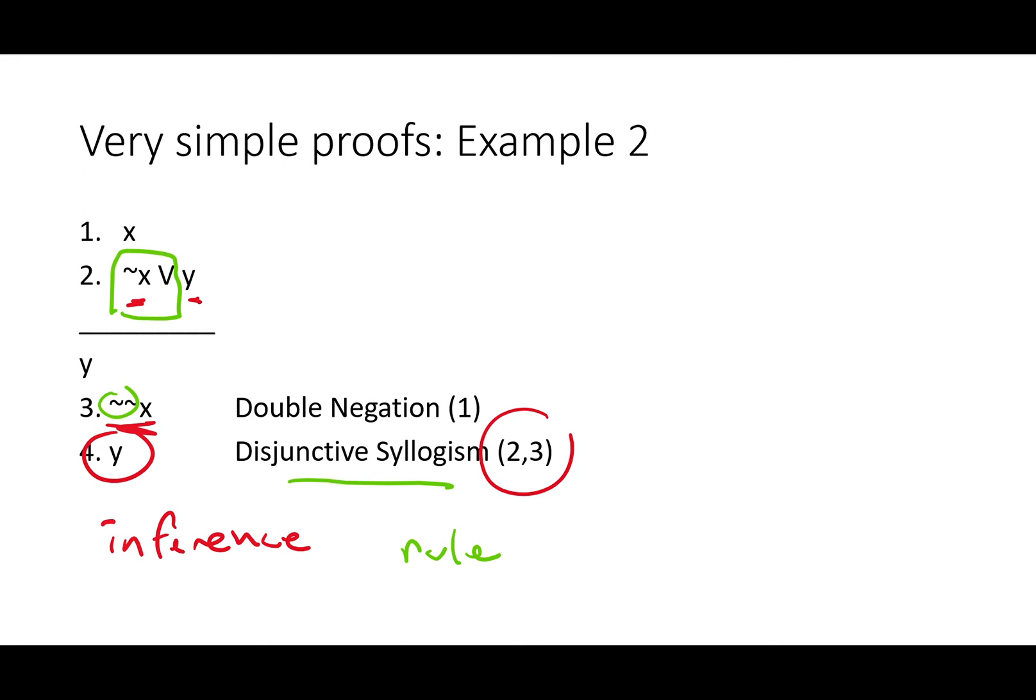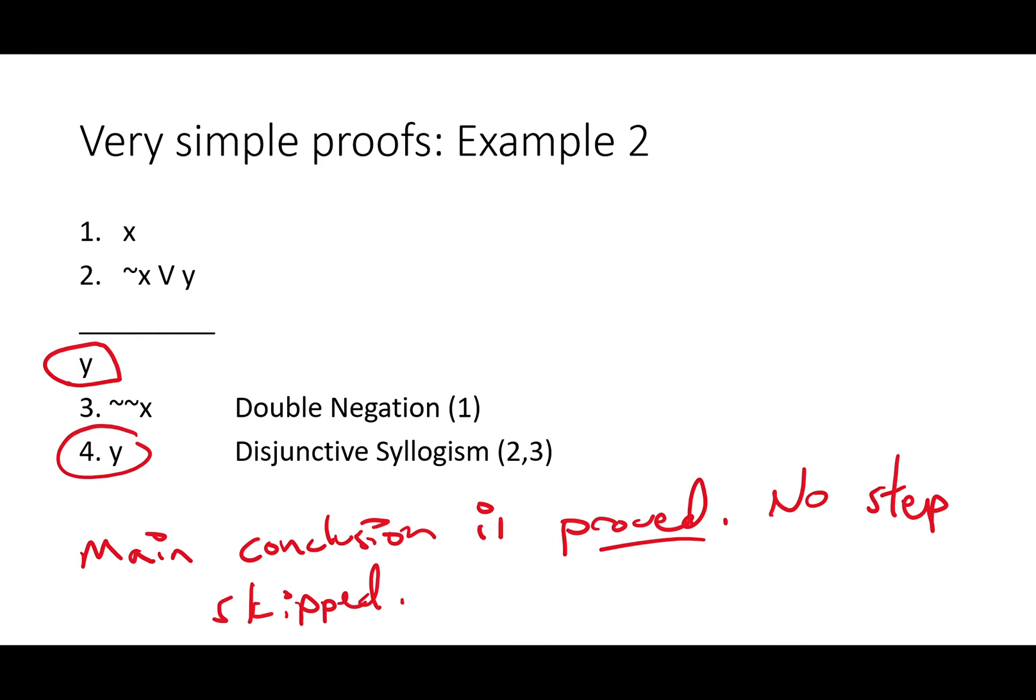Once again, we've reached our main conclusion in just four steps. Don't worry, not all the homework problems will be this short or this easy. But our main conclusion is proved. We haven't skipped any steps, although you'll be tempted later on to skip steps like three double negation. It's actually quite important not to.